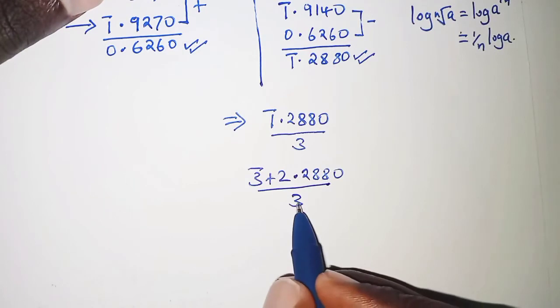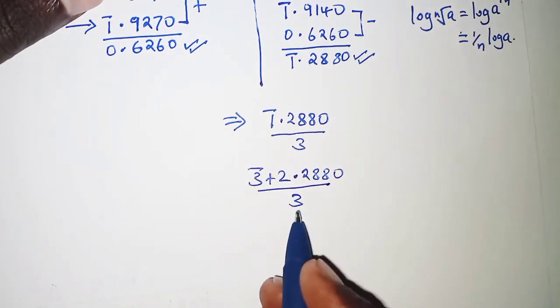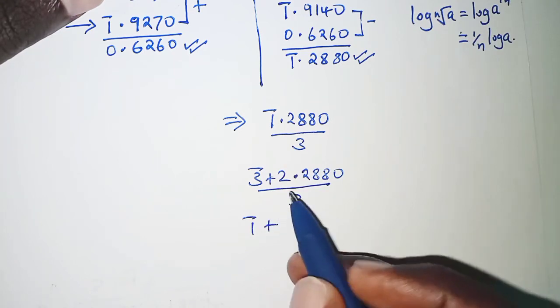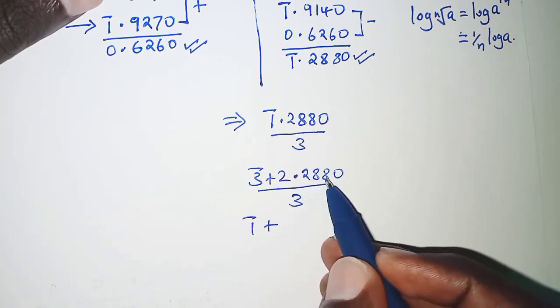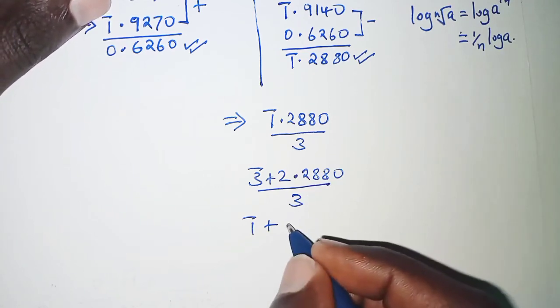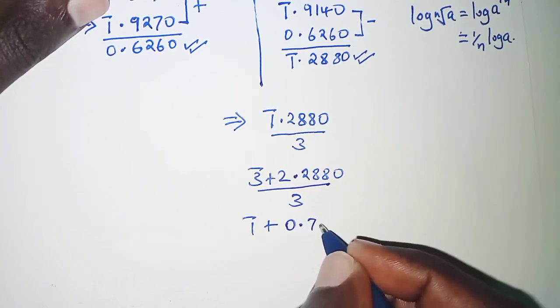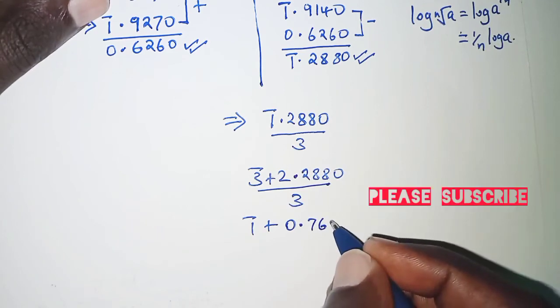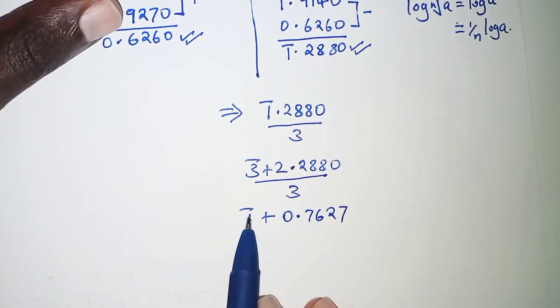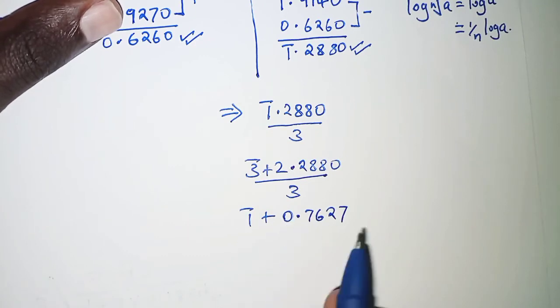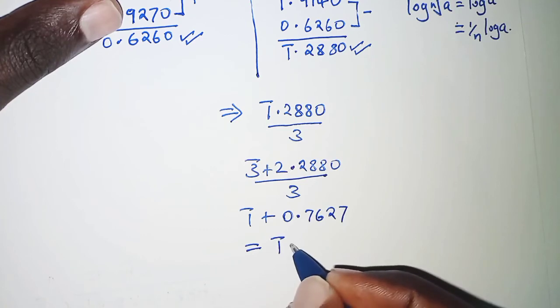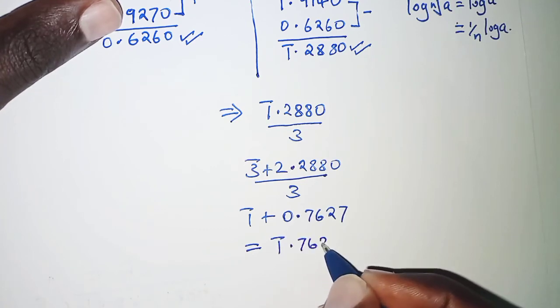We divide bar 3 by 3, and that is bar 1. Then we add that to 2.2880 divided by 3. That should give us 0.7627. When we combine this, bar 1 added to 0 equals bar 1.7627.